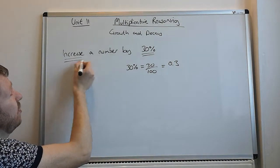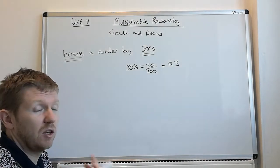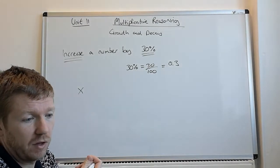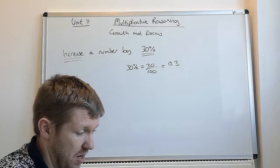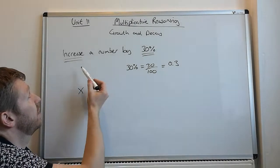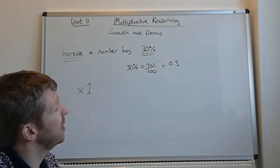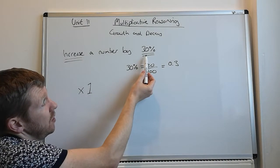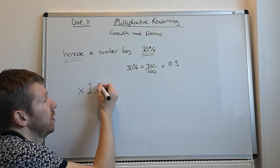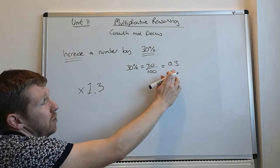If you want to increase a number by 30%, to increase you need to end up multiplying by a number which is bigger than 1. If we multiply something by 1, that means it stays the same. So if we want to increase something by 30%, we need to multiply by something bigger than 1, so we multiply by 1.3. 1 keeps it the same, 0.3 comes from our 30%.